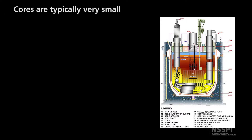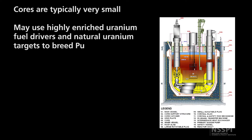One nice thing about these reactors is that they're extremely small — typically about the size of a trash can, so very compact. They often use highly enriched uranium or plutonium as a driver fuel, surrounded by a depleted uranium or natural uranium blanket. That blanket is used to breed plutonium, and these cores are designed so that they actually produce more fuel than they consume. The analogy is like filling your gas tank halfway, driving for a while, and stopping to find the tank completely full.